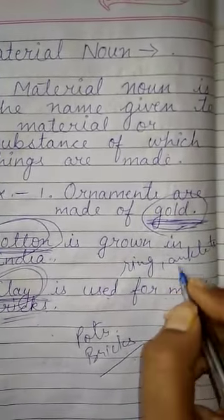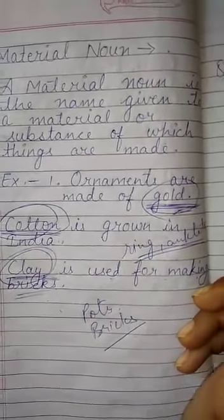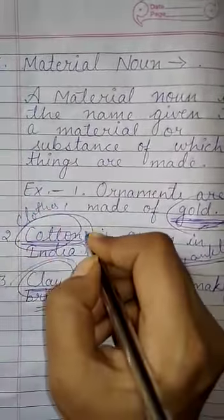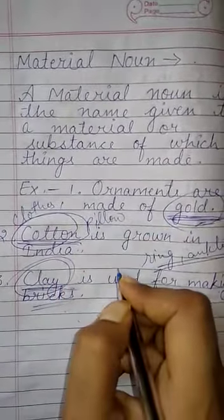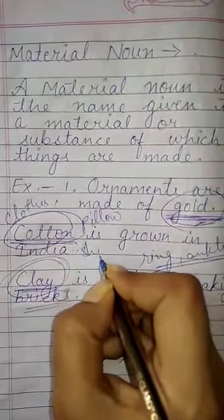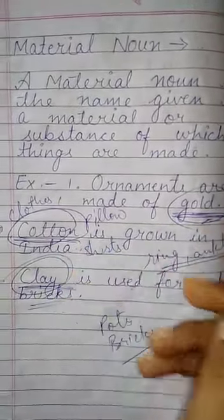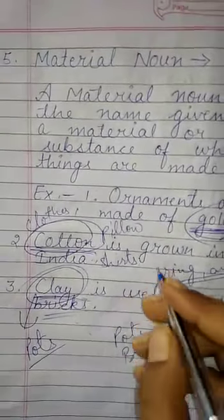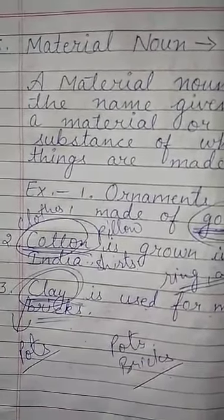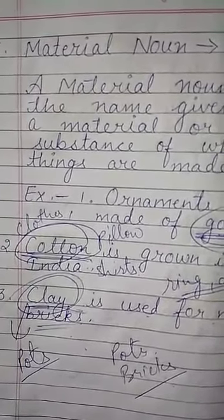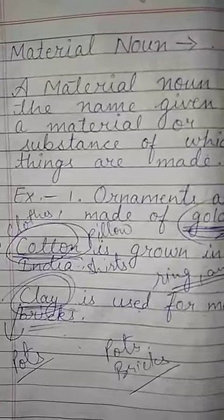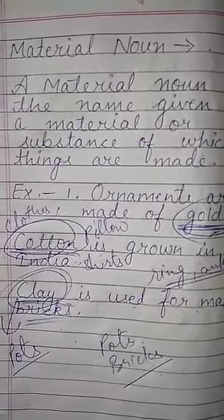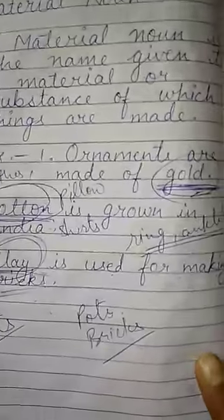From cotton we can make clothes, pillows, shirts, and many other things. From clay, pots are made along with different other items. So these are different things which we can make from these materials, and therefore gold, cotton, and clay are all called material nouns.